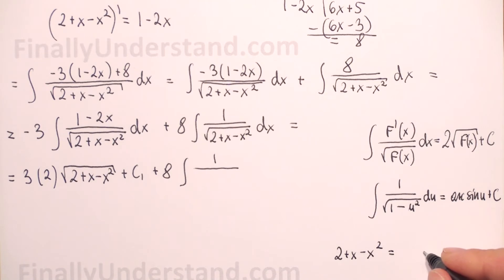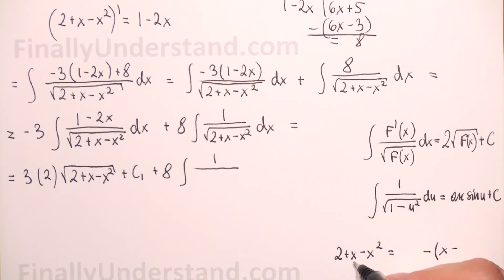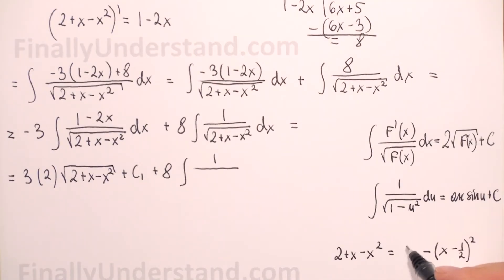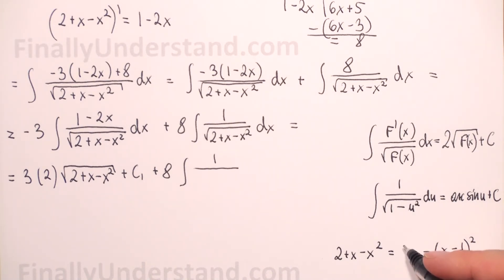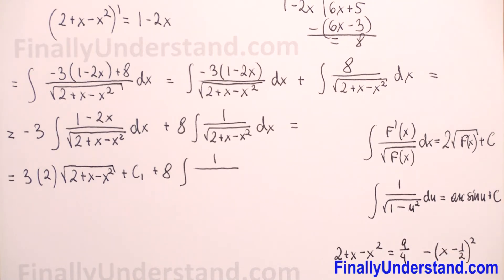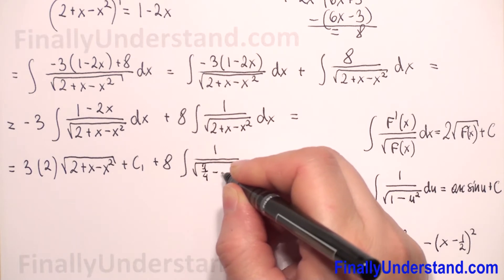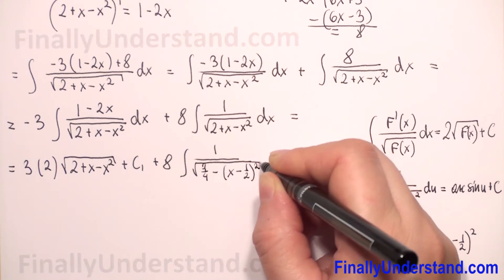To get that form we complete the square. The expression under the square root is 2 plus x minus x squared. We factor out negative 1 before the x terms and write negative times (x minus one-half) squared. Expanding, this gives negative x squared plus x minus one-quarter. We need 2 at the start, and 2 plus one-quarter equals nine-quarters, so the expression becomes 9 over 4 minus (x minus one-half) squared.